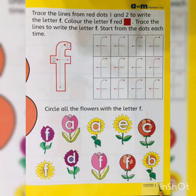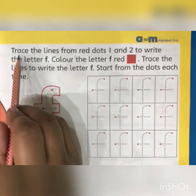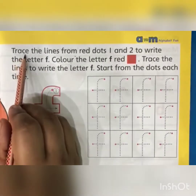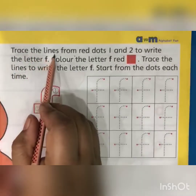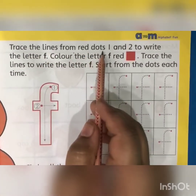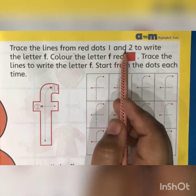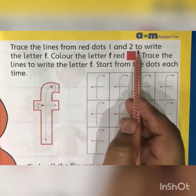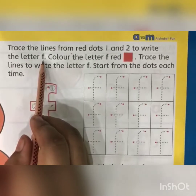Kids, on your A to M book, the page number is 21 and our today's work is to trace the lines from red dots one and two to write the letter F.